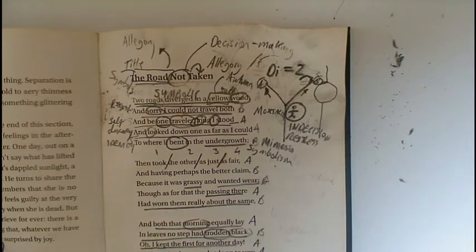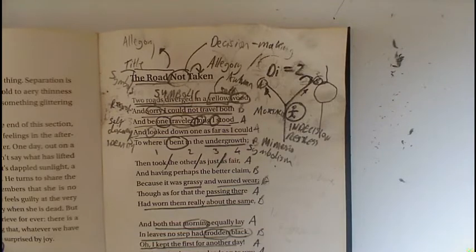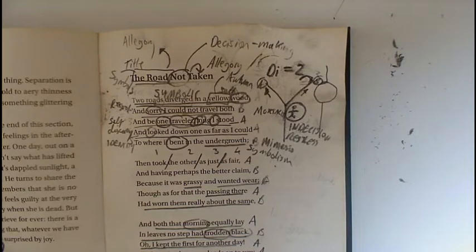Welcome back. So I'm going to read stanza two and go through the same close reading process, then we'll have a checkpoint after that. Stanza two: 'Then took the other, as just as fair, and having perhaps the better claim, because it was grassy and wanted wear; though as for that, the passing there had worn them really about the same.'